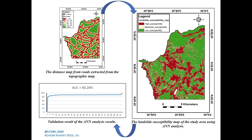As a result of using the artificial neural networks analysis, a landslide susceptibility map was created. A validation process of the landslide susceptibility map was carried out using the area under the curve analysis, based on just the testing sets of landslides which were not included in the analysis. The area under the curve value was 90.228%.